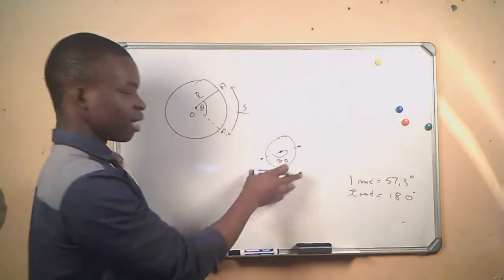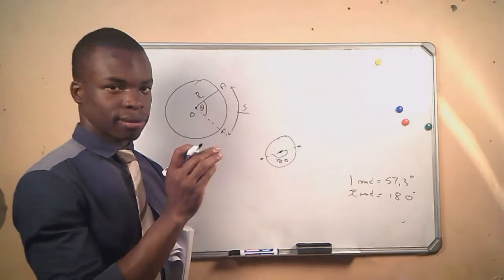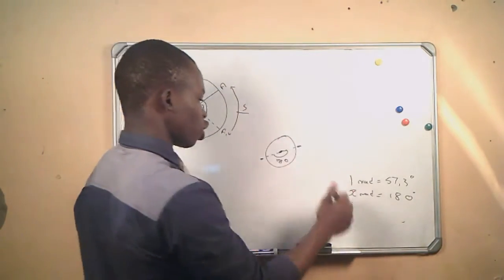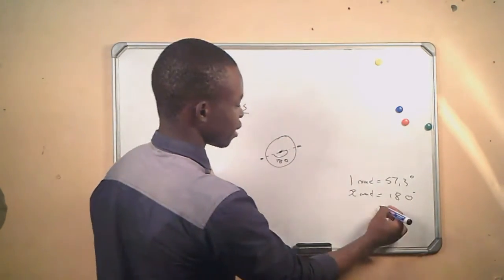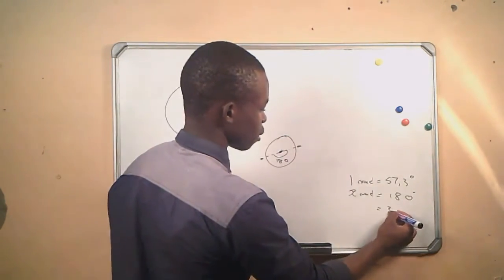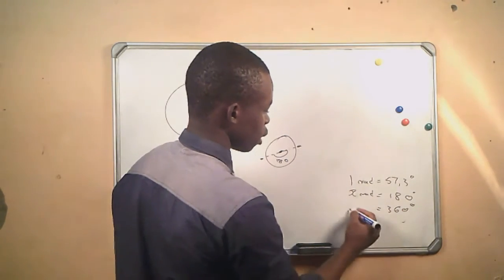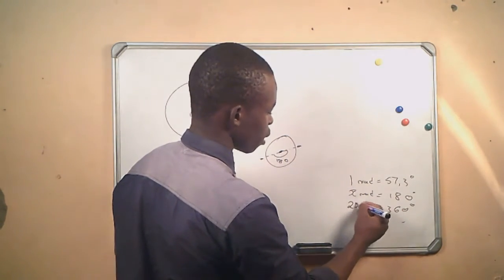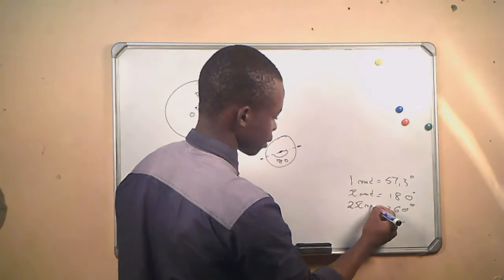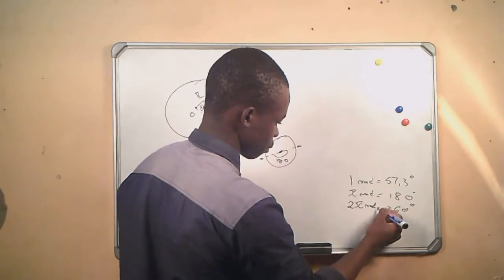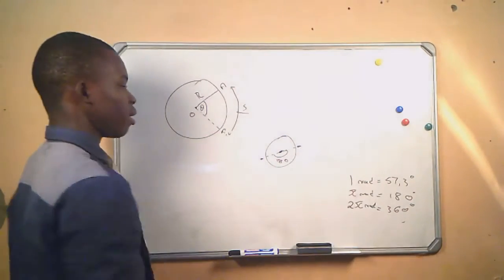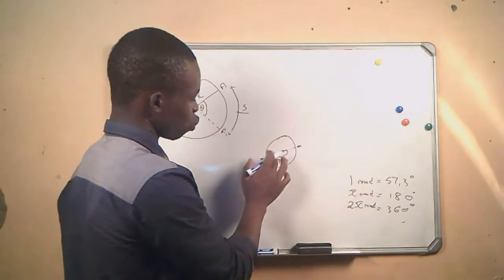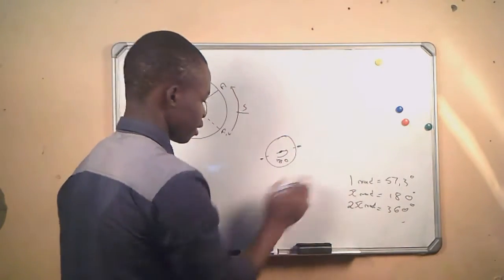A semicircle is half a revolution. If the wheel makes a full revolution, that is 360 degrees, and the value in radians will be 2π rad — two times the angle of the semicircle, giving us 360 degrees or 2π radians.